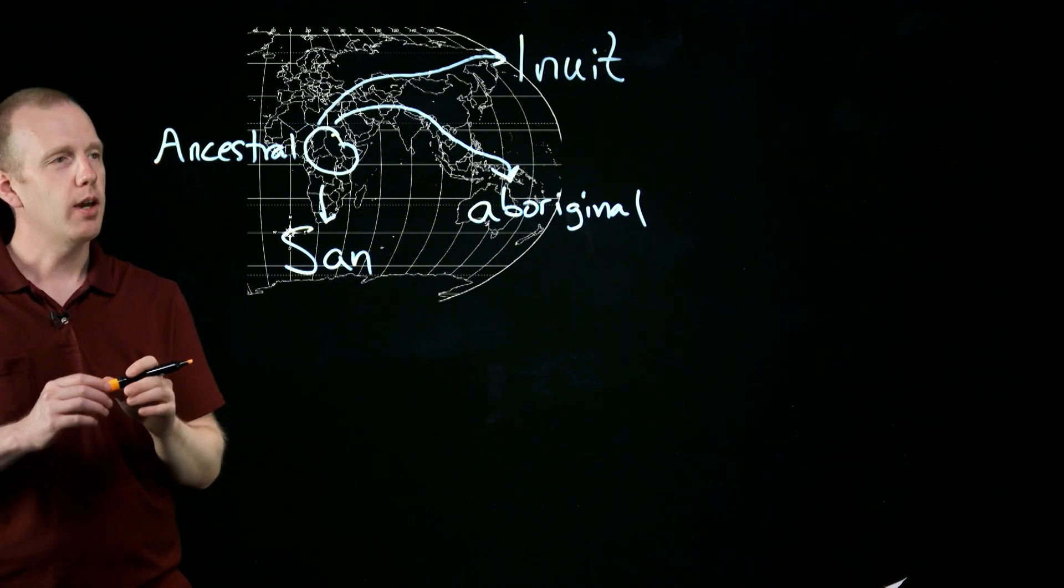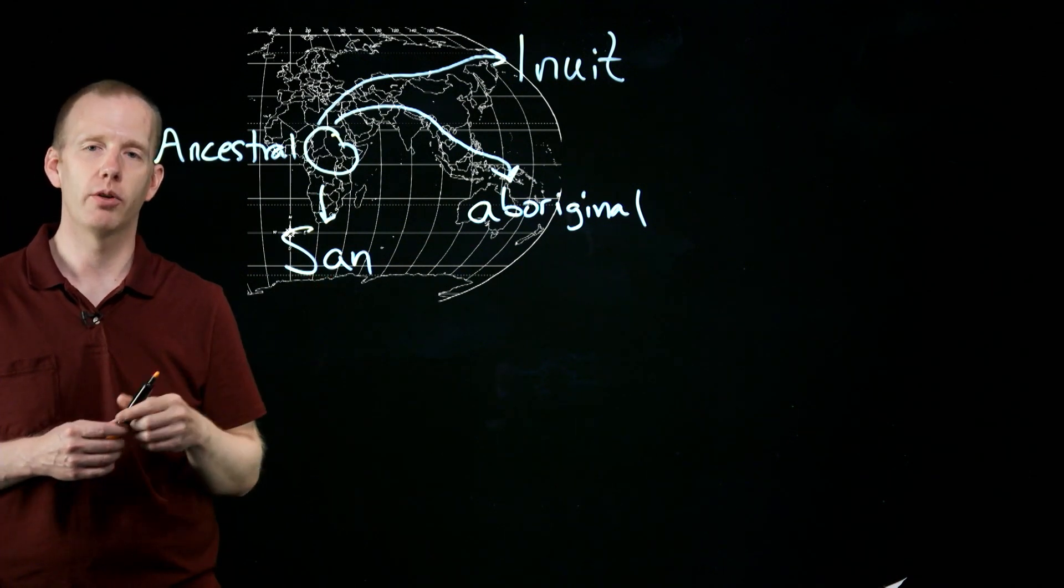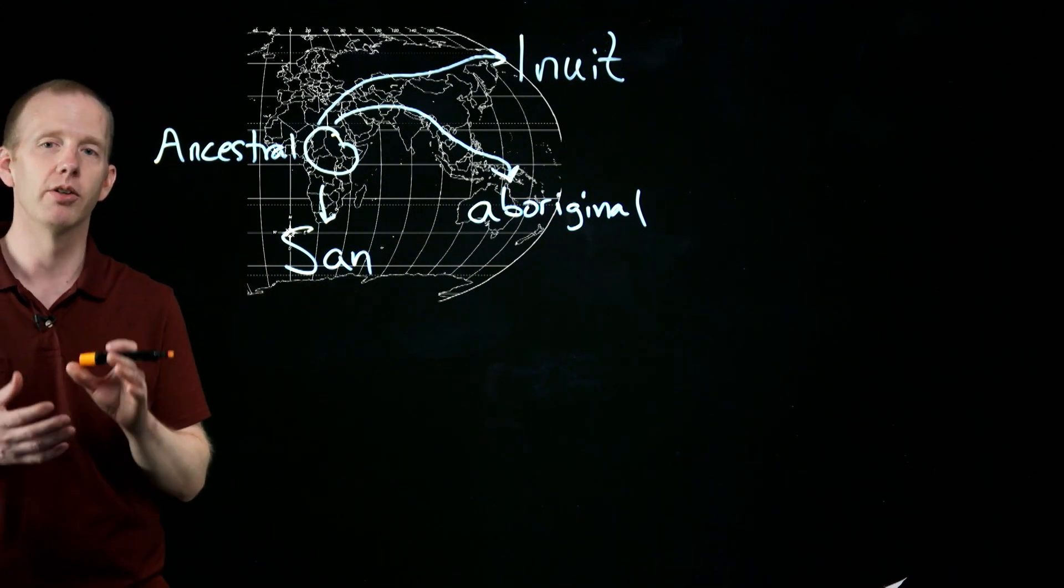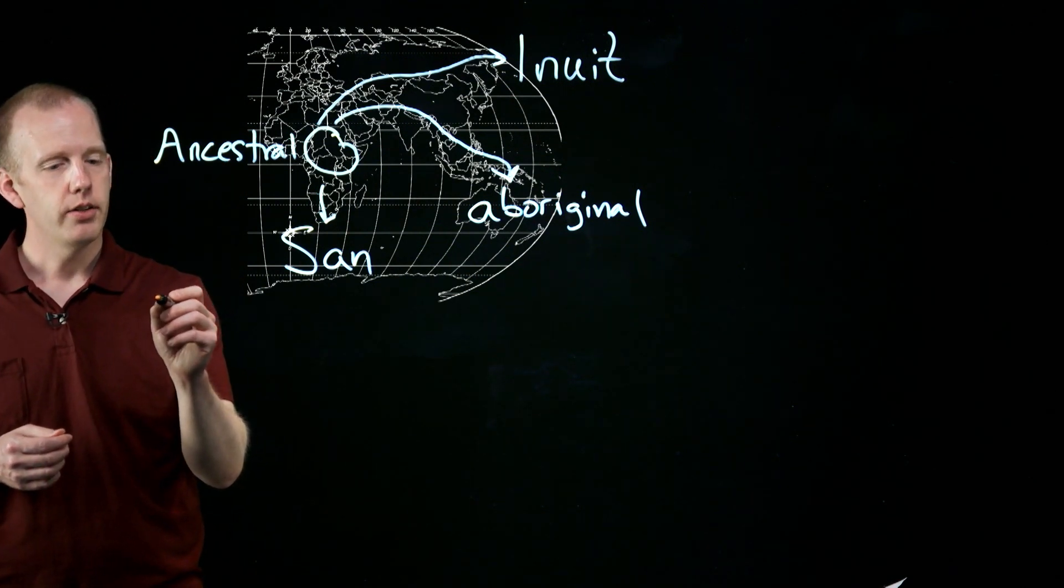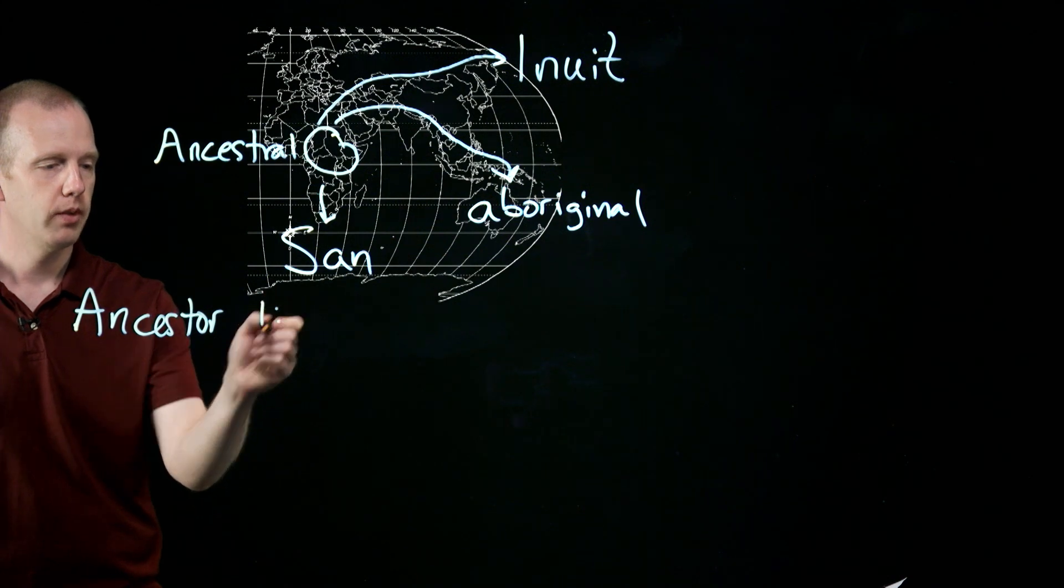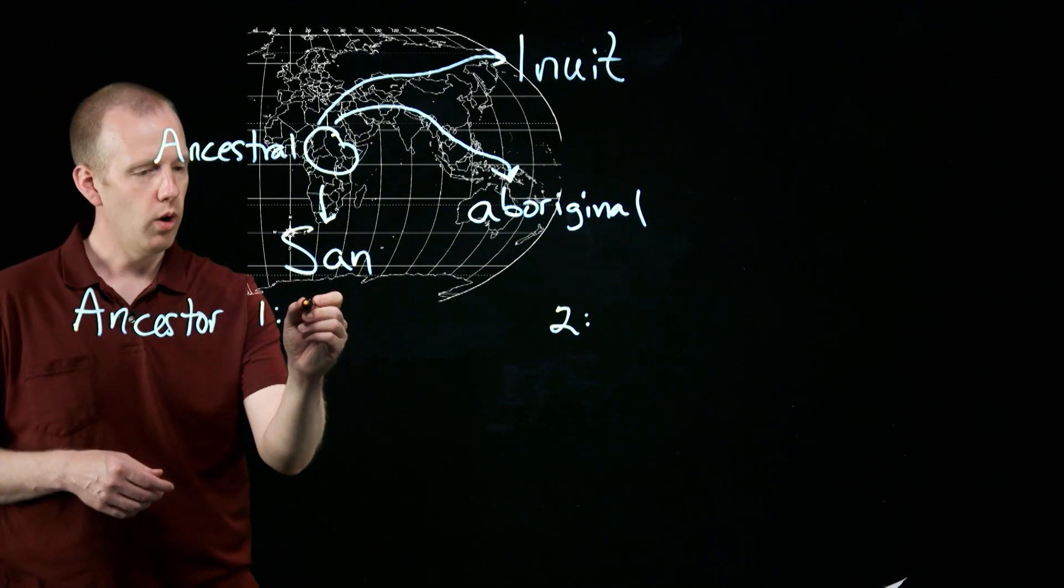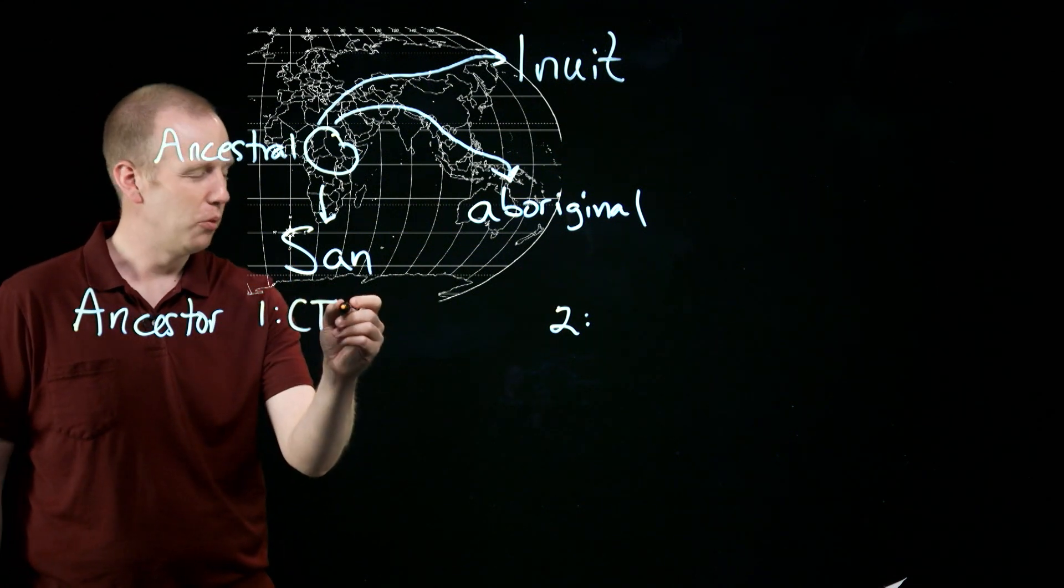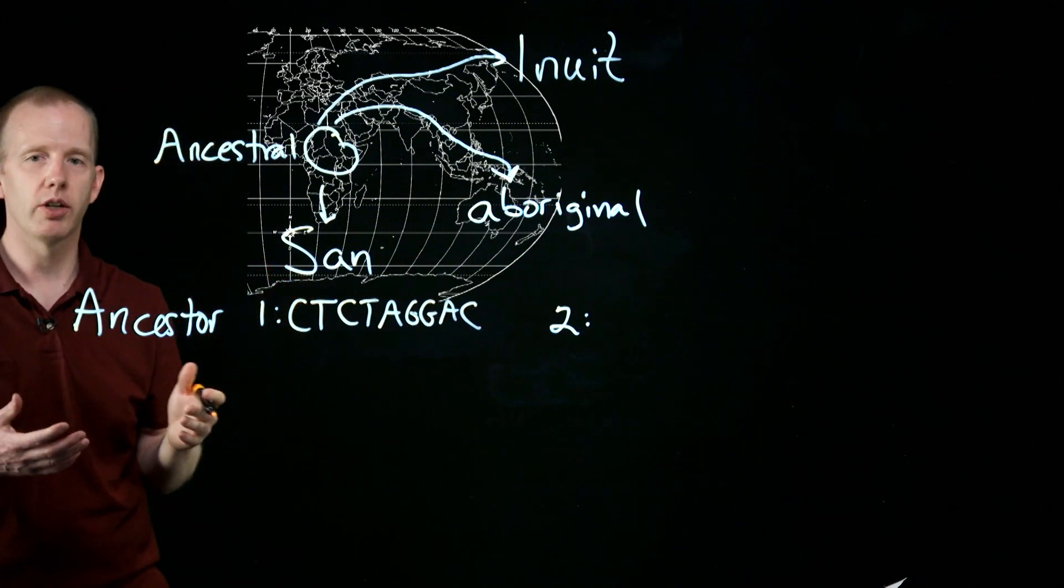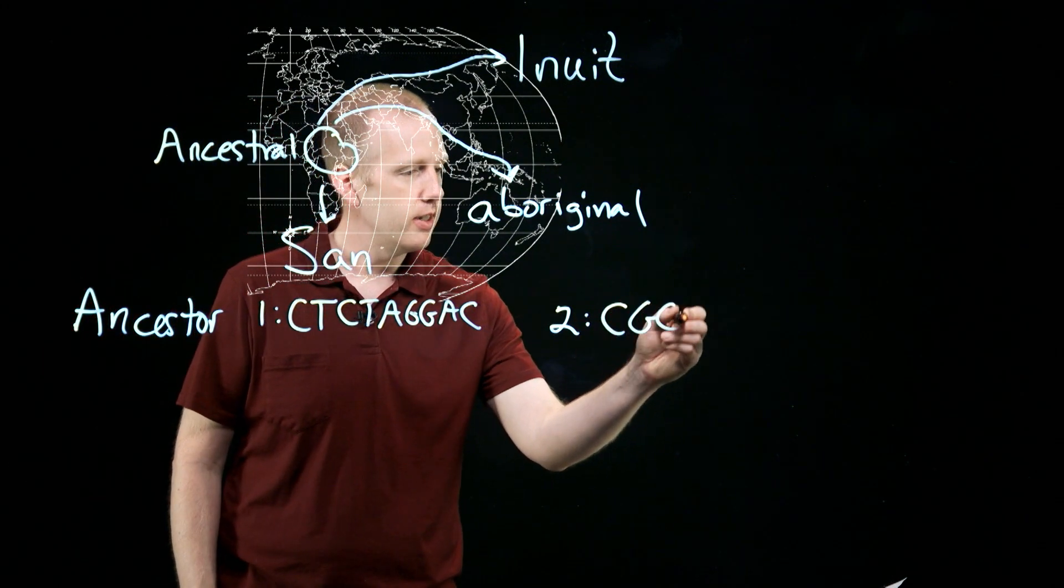So to move on, we should think about what the ancestor's chromosome looked like and how it changed to become the modern San, Aboriginal, and Inuit chromosomes. What I'm about to tell you is entirely made up - they're example DNA sequences that I've created, so they don't actually reflect the real DNA sequences of these groups. For the ancestor, let's talk about two different chromosomes. On chromosome 1, the ancestor's DNA sequence might have been C-T-C-T-A-G-G-A-C, short example. And on chromosome 2, different chromosome, a different piece of DNA, they could be C-G-C-T-C-A.